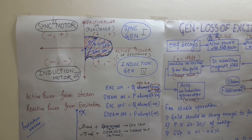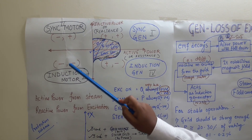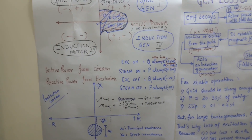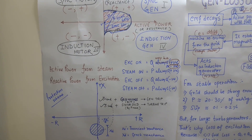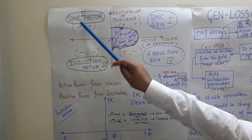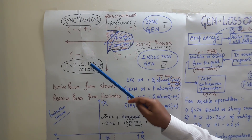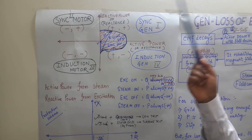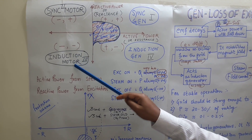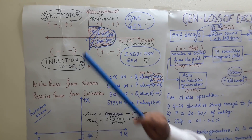During loss of excitation, the generator will operate in this zone as an induction generator. During loss of prime mover, the generator may operate in the second or third quadrant depending upon the excitation. If excitation is strong, it will operate in the synchronous motor zone. If there is no excitation, it will also take excitation from the grid and run as an induction motor with speed lower than the synchronous speed.